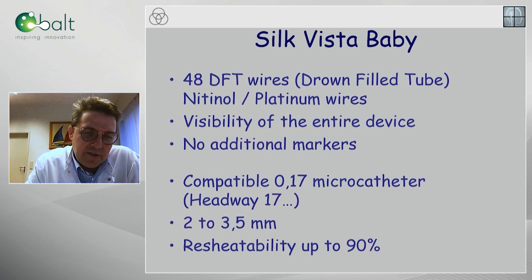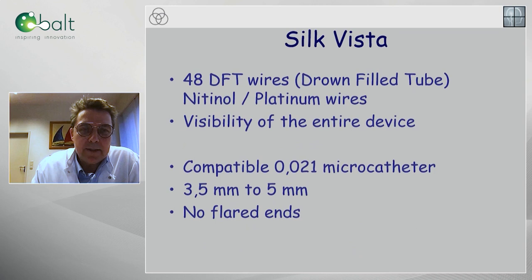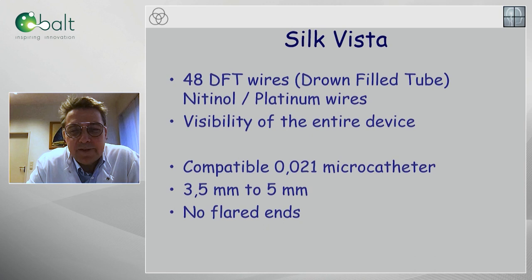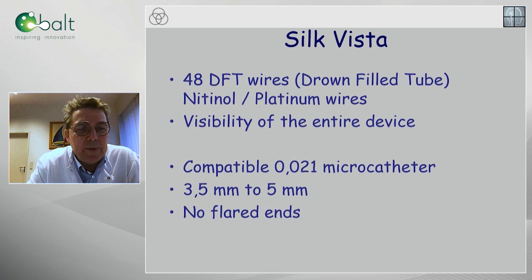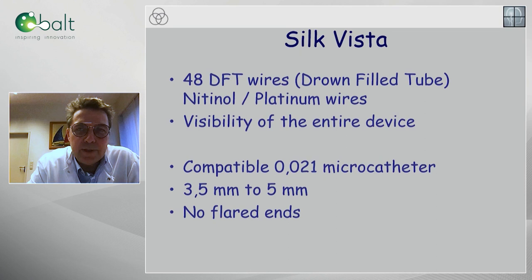The change that occurred over the past year: we now have the adult version, which is also available. The Silk Vista — same number of wires, same visibility again with DFT wires — is this time compatible with the 0.021 microcatheter, whatever catheter you wish to use, in sizes reaching from 3.5 to 5 millimeters, with again the advantage of not having any flared ends, which is specifically helpful if you're doing telescopic flow diversion.